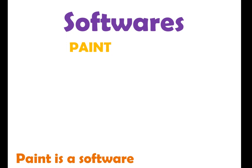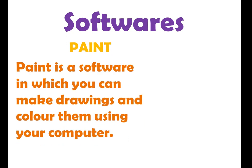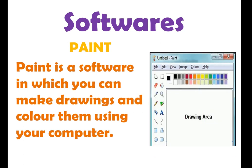Paint. Paint is a software in which you can make drawings and color them using your computer. What is Paint? Paint is a software. What do you do in Paint? You can make drawings and color them.